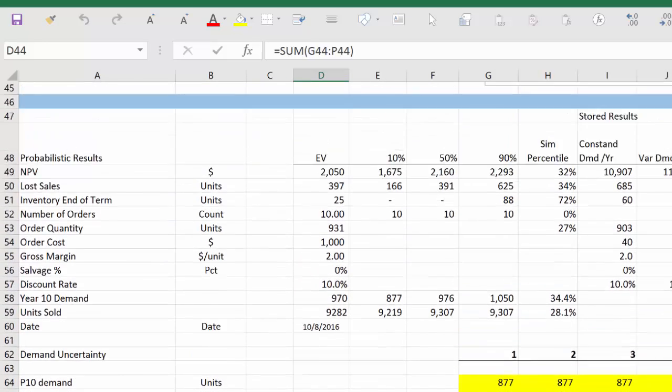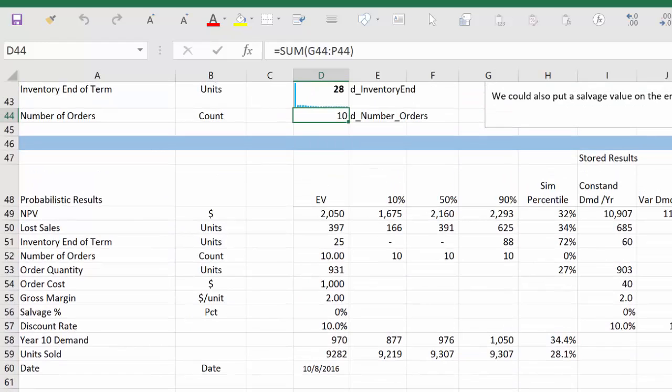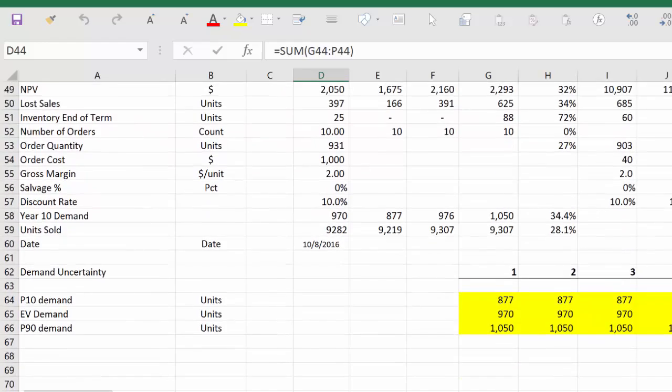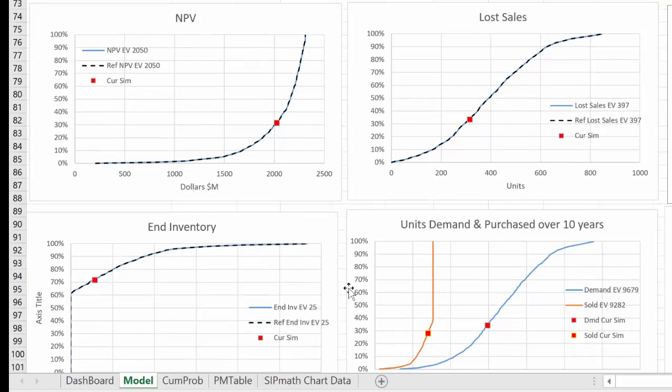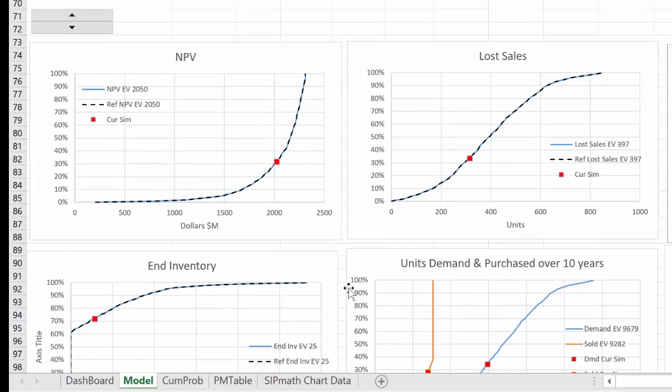So now, numbers are fine, but I find it much easier to look at graphics. So in this particular case, I set the order quantity of 931 to be the reference case. It turns out that that's actually optimized. In other words, if I try to maximize my NPV, my expected value NPV, that's the best I can do with this situation.